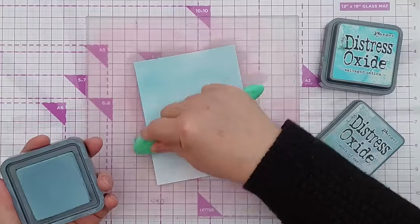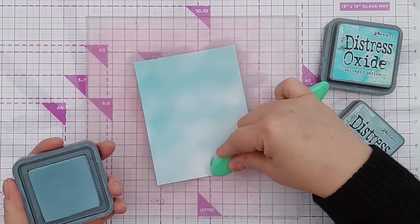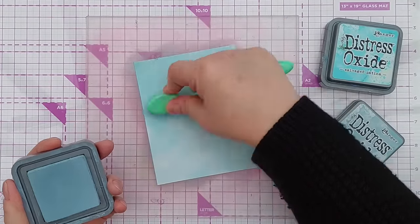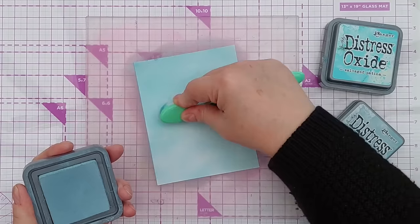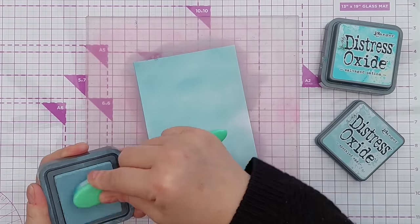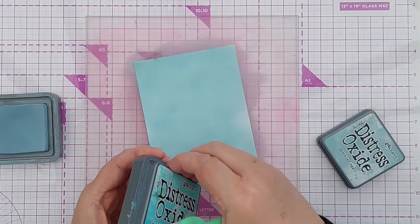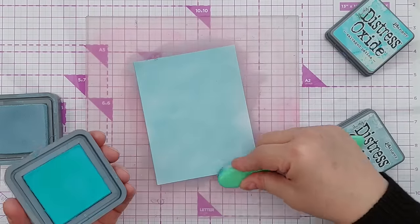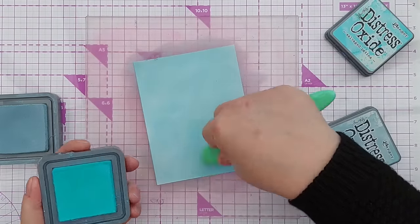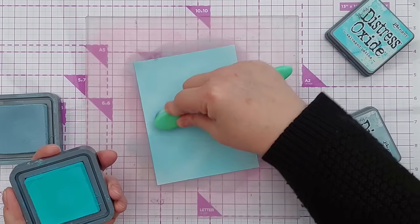Now I'm going to add a bit of Salvaged Patina here and there just to give some variation over the panel, and get that all nice and blended. It doesn't have to be perfect.